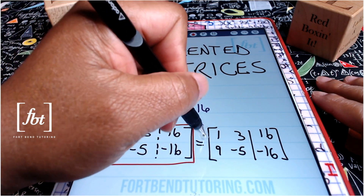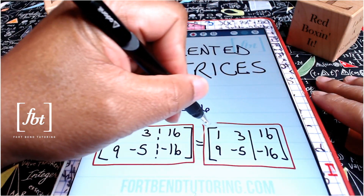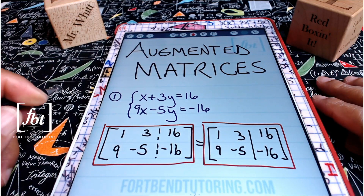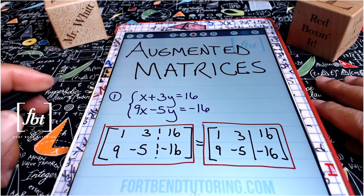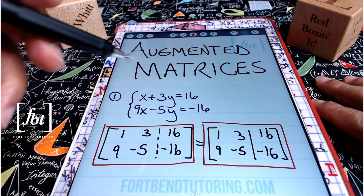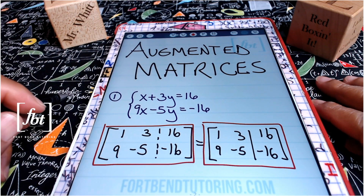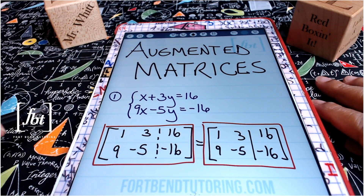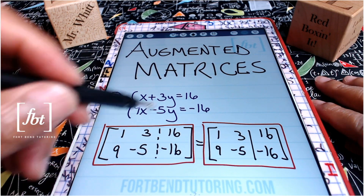Red box it — I'm going to box up these answers here. The way I'm going to write the answer is just like the one on the right, and that is problem number one.